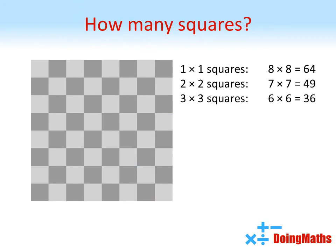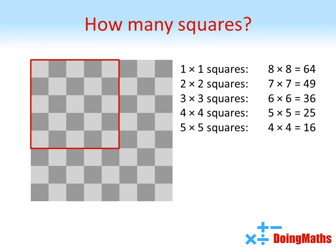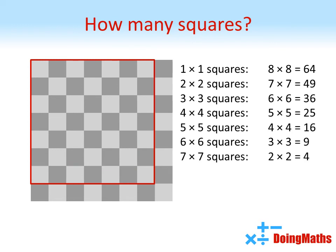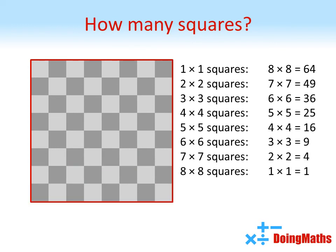We have worked out how many 1x1, 2x2 and 3x3 squares there are. By using the same method we can see that there are 25 4x4 squares, 16 5x5 squares, 9 6x6 squares, 4 7x7 squares and finally 1 large 8x8 square. By adding all of these together we get a total of 204 squares on a chessboard.